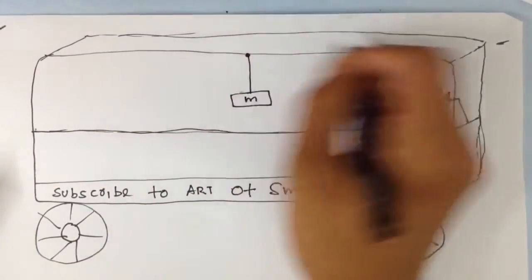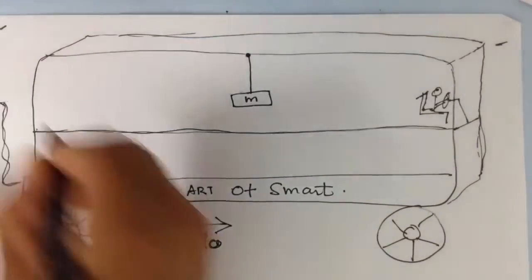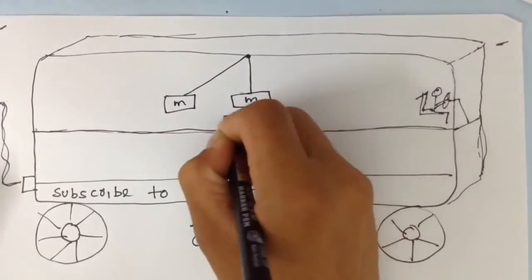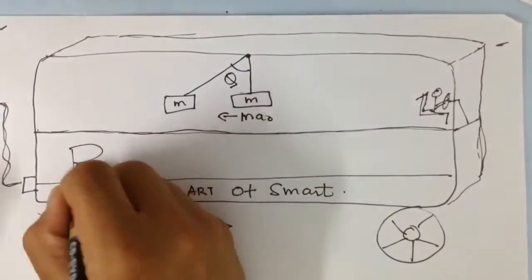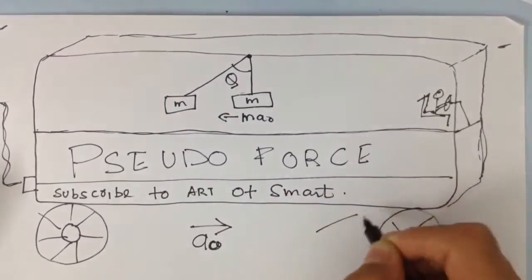Consider a pendulum of mass m hanging from a bus which is stationary or moving with constant speed. After some time, the bus starts accelerating. Then a force equal to Ma0 starts acting on the pendulum in the opposite direction of acceleration, which pushes it behind by an angle theta. This force is called pseudoforce. Pseudoforce is a fictitious force or apparent force which acts on all bodies that have mass and whose motion is described using a non-inertial frame.